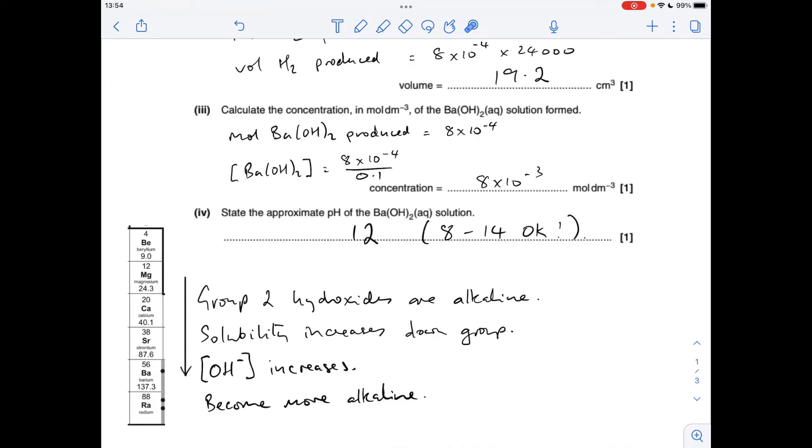And for the last part of B, we've just got to state the approximate pH of the barium hydroxide solution. So you can see I've gone for 12. I'll explain why in a second. But the Mark Scheme just said anything between 8 and 14. In other words, an alkaline pH was fine. Just quickly explain where the 12's coming from. So there's group 2. We know that group 2 hydroxides are alkaline because they contain aqueous hydroxide ions when they're in water. The solubility of them increases as you go down the group, and so therefore the hydroxide ion concentration will also increase. And as a result, they get more alkaline. So the 12, basically, I want it to be further away from 8, but closer to 14, essentially.